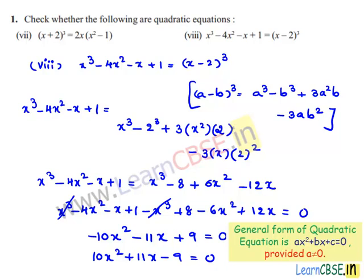We know that the general form of a quadratic equation is ax squared plus bx plus c equals 0. The equation obtained, 10x squared plus 11x minus 9 equals 0, is similar to the general form. We can conclude that the given equation is a quadratic equation.